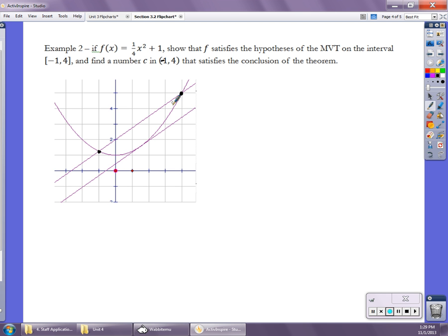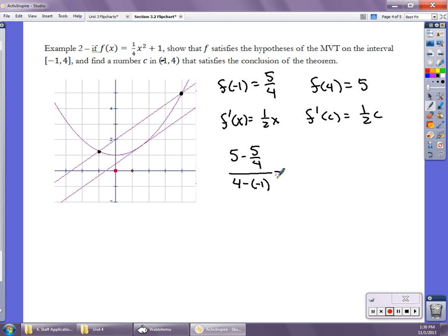So what ends up happening is this. First of all, we need to calculate f(-1) so we can calculate the slope of that secant line. And f(-1) is 5/4. I also need f(4), and I got that to be 5. And then I need to find the derivative, f'(x). And f'(x) is (1/2)x, or f'(c) is (1/2)c. So now that gives me all the information. And I would set up the slope of the secant line is (5 - 5/4)/(4 - (-1)), and that equals (1/2)c.